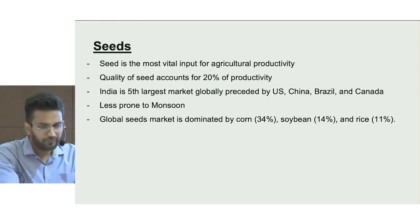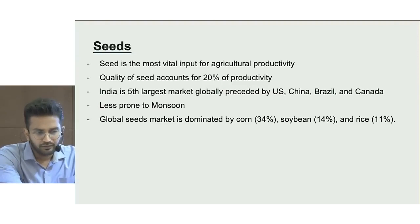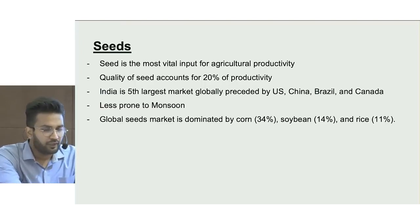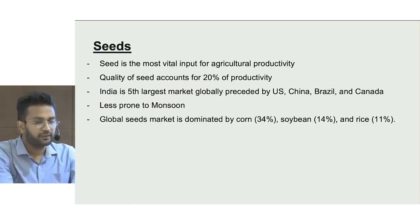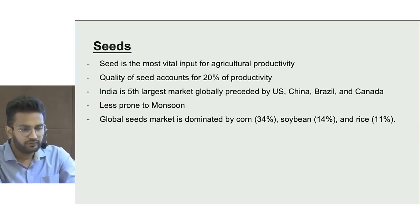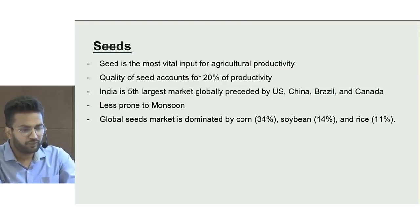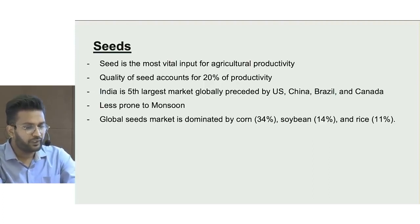Moving to the seed segment — although there are not many listed players, seeds are an important input for agricultural productivity. Quality of seed accounts for 20% of agricultural productivity. In terms of global market size, India is the fifth largest, led by the US, China, Brazil and Canada. The Indian seed sector is close to $5 billion growing at 8-10% annually. Seed is a highly seasonal business with close to 70% of annual revenue coming in Q1. Corn, soybean and rice account for around 60% of the global seeds market.